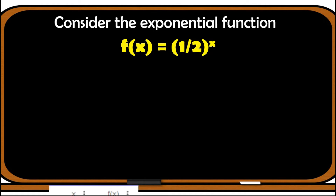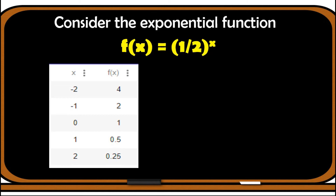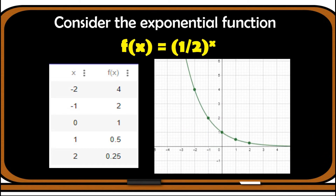Now let us analyze the graph and table of values of exponential functions whose base is between zero and one. Consider f(x) = (1/2)^x. Looking at the table of values, as the values of x increase, the values of f(x) are decreasing, and if we continue getting higher values of x, we see that f(x) gets closer to zero. This is easily observed with the graph — as x increases, y decreases and gets closer and closer to zero.